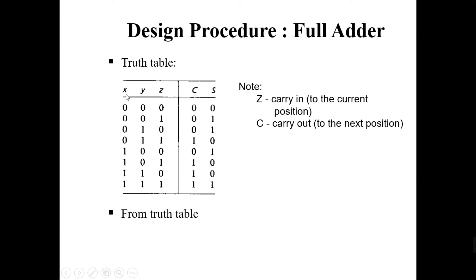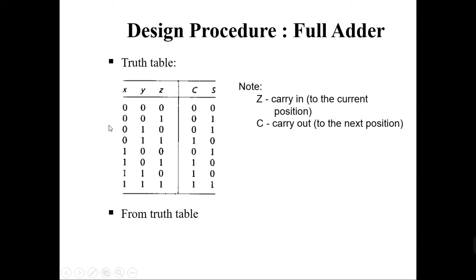This is the truth table for a full adder. There are three inputs and two outputs, giving eight rows covering all binary combinations from zero to seven. For the first row with inputs 0,0,0, the sum and carry are both zero. For a random example like 1,0,1 — adding those three values — the sum part is zero and the carry part is one. For the last row with three ones, the sum is one and the carry is also one.